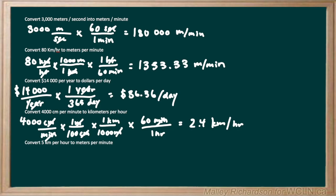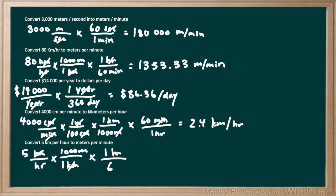Our final question wants us to convert 5 kilometers per hour to meters per minute. We start with 5 kilometers per hour and want to change it to meters per minute. To cancel the kilometers, we know there are 1,000 meters per kilometer, so we put the kilometer on the bottom and 1,000 meters on top, making the kilometer units cancel out. Now we're left with meters per hour. To get rid of the hour, we use the ratio of 60 minutes per hour — writing one hour on top with 60 minutes on the bottom. The hours cancel out and we're left with meters per minute. 5 times 1,000 divided by 60 gives us 83.3 meters per minute.